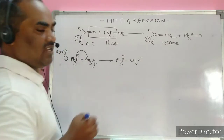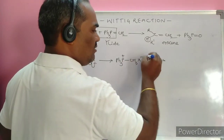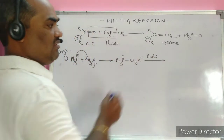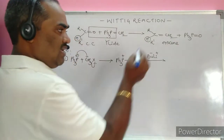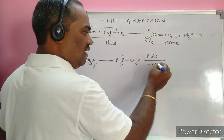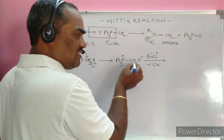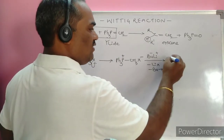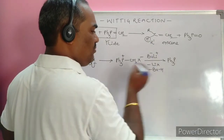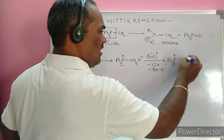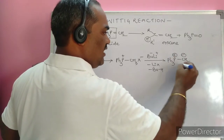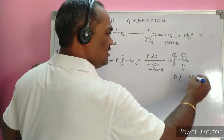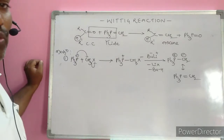In the presence of butyllithium (or phenyllithium, or any alkyllithium), the lithium combines with X⁻ to form LiX, and the butyl carbanion abstracts a proton, forming butane. The remaining species is Ph₃P⁺–CH₂⁻, which under resonance can be written as Ph₃P=CH₂. This is called the ylide, or phosphorus ylide.